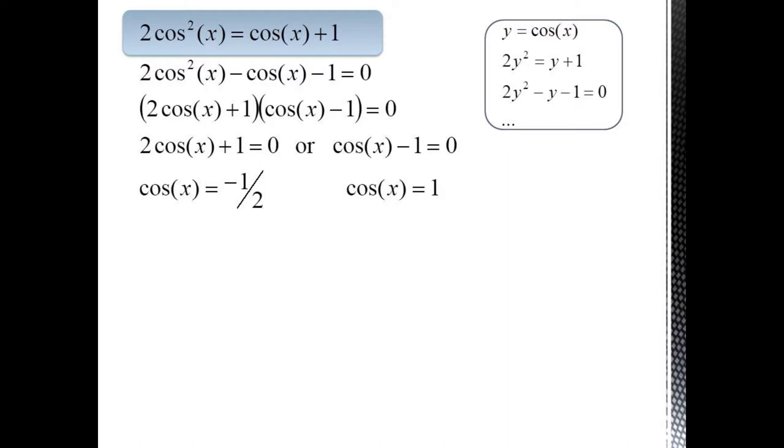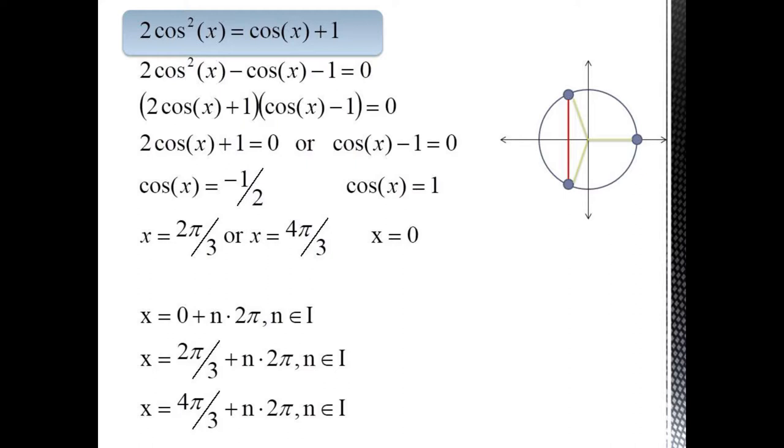And we can solve both these for cosine and get cosine x equals negative one half or cosine x equals 1. On the unit circle, our x values equal negative one half at 2 pi over 3 and 4 pi over 3 and cosine x equals 1 when x equals 0. Now to include all our congruent angles, we just add n times 2 pi.